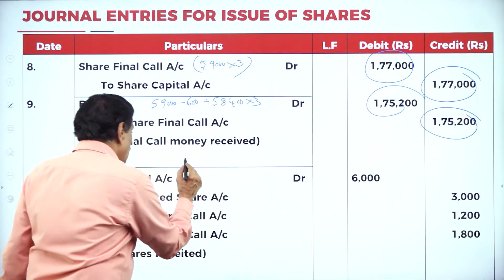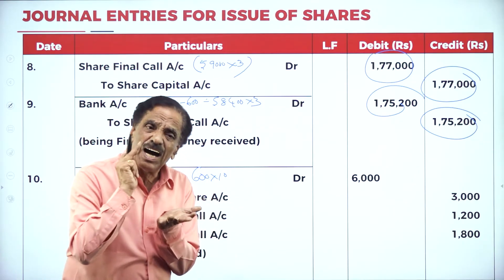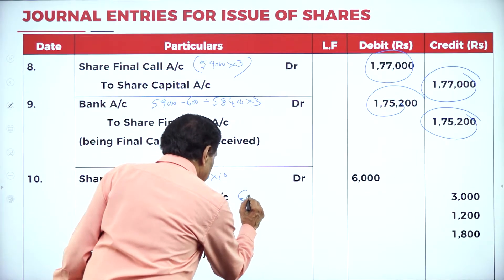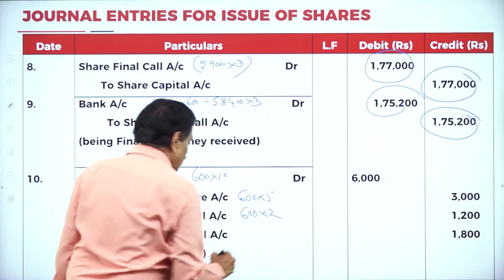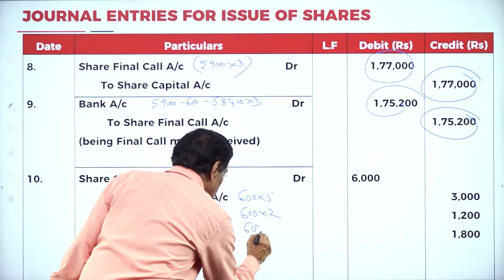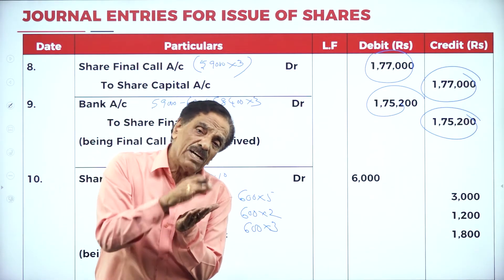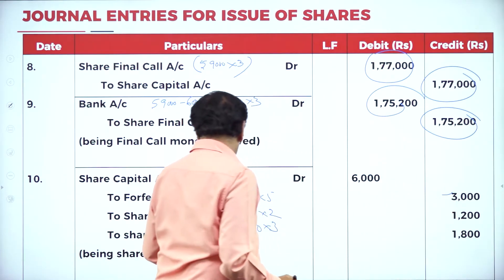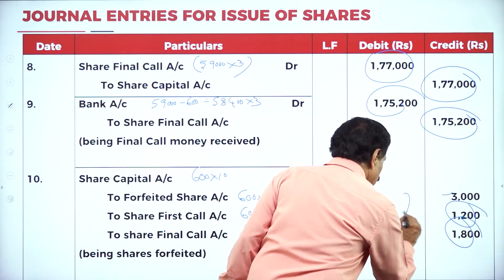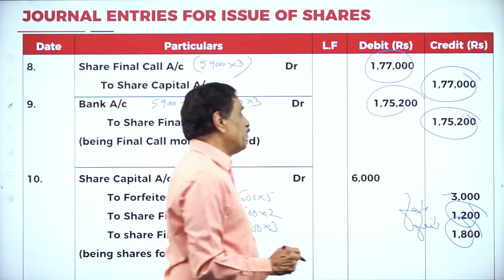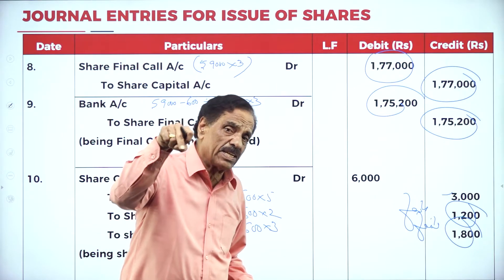Forfeiture of Mr. Sharon's 600 shares: Share Capital Account Dr. 600 × 10 = 6,000. He paid application (rupees 3) and allotment (rupees 2) — 600 × 5 = 3,000 already paid. He failed to pay the first call: 600 × 2 = 1,200. He failed to pay the final call: 600 × 3 = 1,800. Forfeiture entry: Share Capital Dr. 6,000; To Share First Call 1,200; To Share Final Call 1,800; To Forfeited Shares Account 3,000. Total forfeited shares account: 5,000 (Varun) + 3,000 (Sharon) = 8,000.